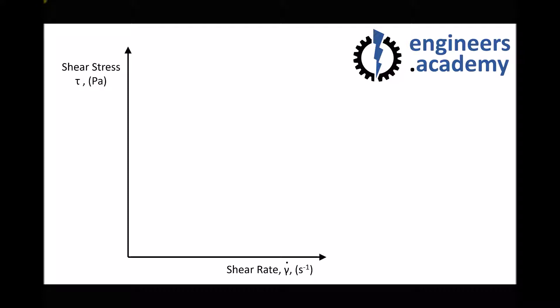Now the reason why plotting different fluids on these axes is useful is because, as we mentioned, dynamic viscosity is shear stress over shear rate. Well if we do shear stress on the y-axis divided by shear rate on the x-axis, what we are actually referring to there is the gradient of a graph. Gradient is change in y over change in x. So when we plot these different fluids on this graph, it's the gradient of the graph that represents the dynamic viscosity.